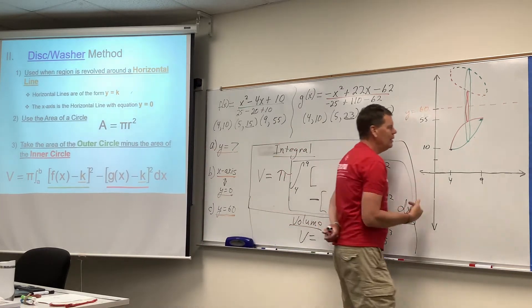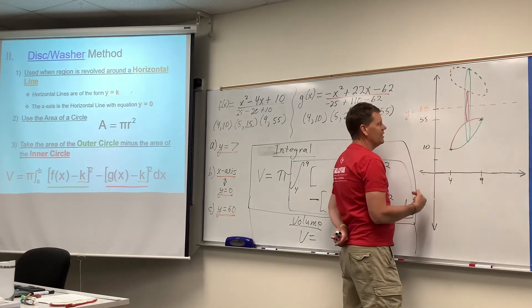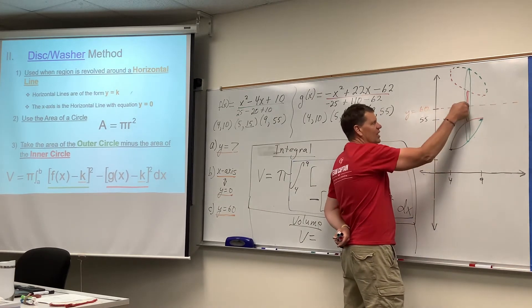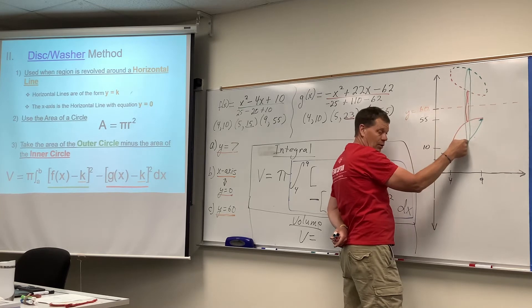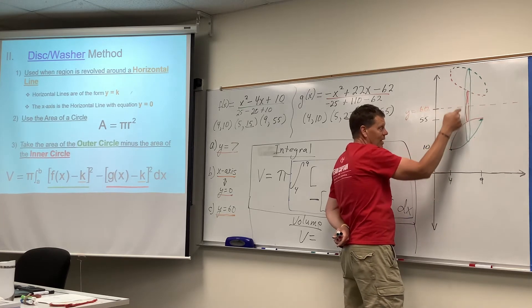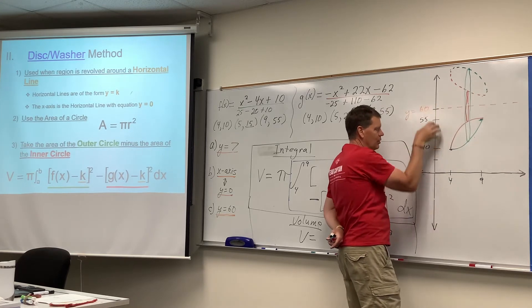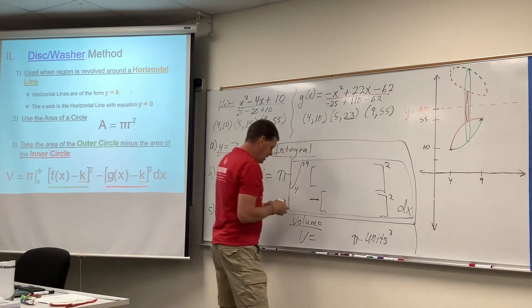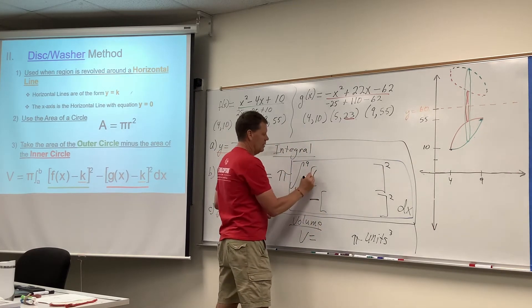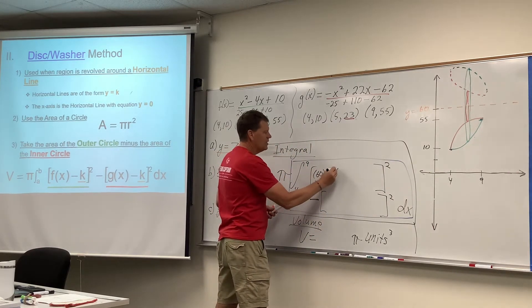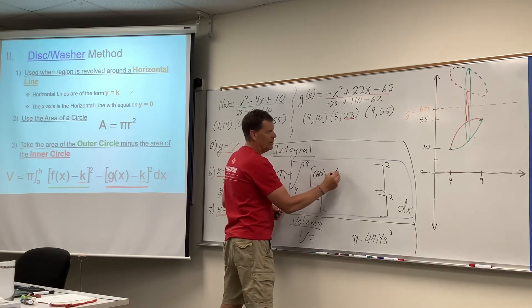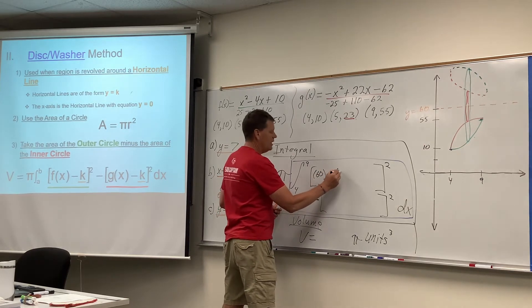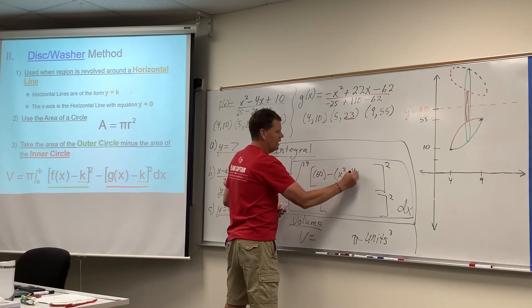But here's the deal on this. The outside green one, wouldn't the radius be 60 minus the curve? Yes, 60 minus the curve, because 60 is above the curve. 60 minus the green curve, the outside: x squared minus 4x plus 10.